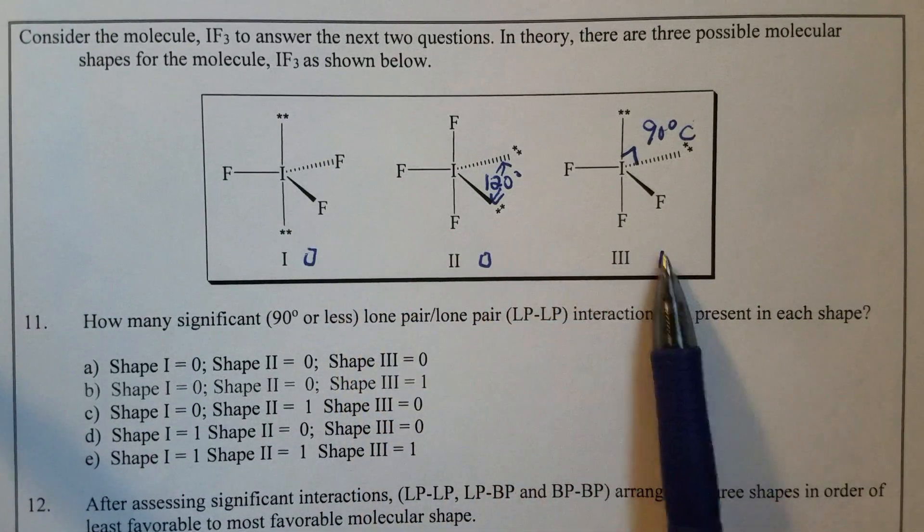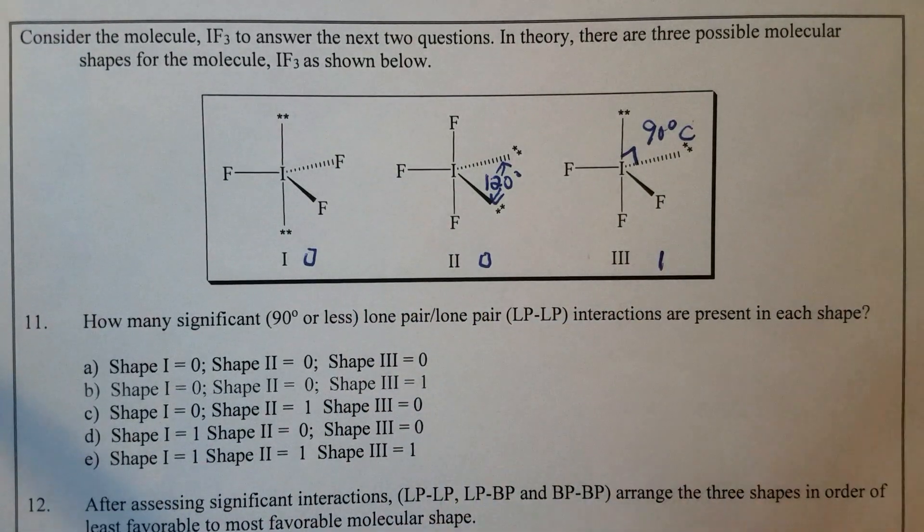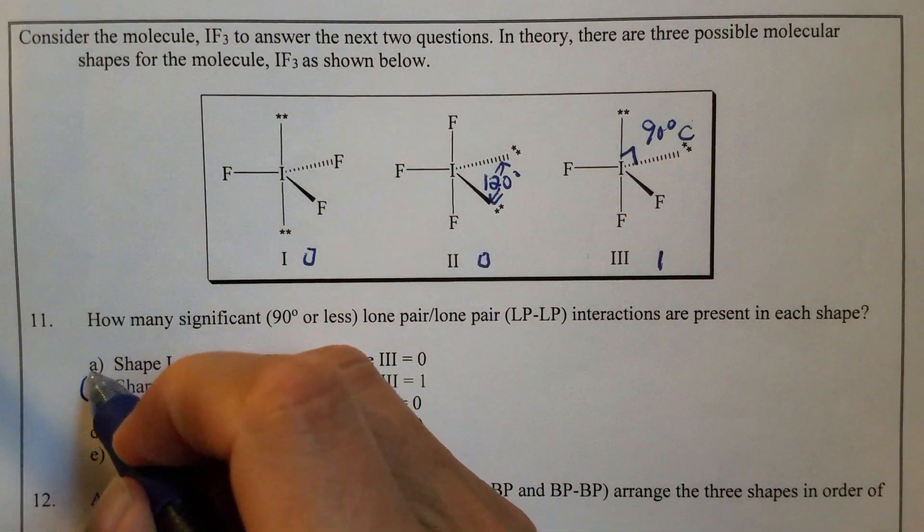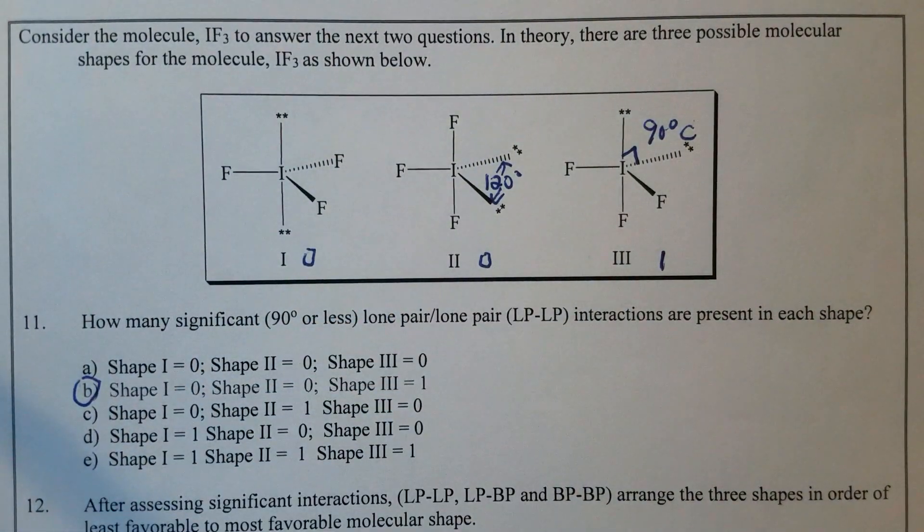Therefore, 0-0-1, you just take a look, 0-0-1, that has to be B. So B is the correct answer.